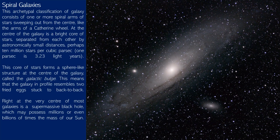Spiral galaxies consist of one or more spiral arms of stars sweeping out from the centre like the arms of a Catherine wheel. At the centre is a bright core of stars separated by astronomically small distances — perhaps 10 million stars per cubic parsec, one parsec being 3.23 light years. This core of stars forms a sphere-like structure called the galactic bulge.